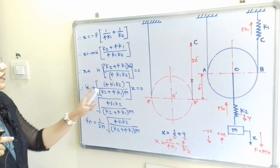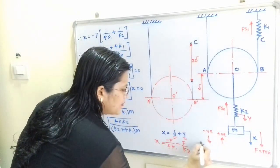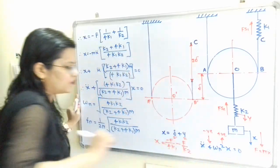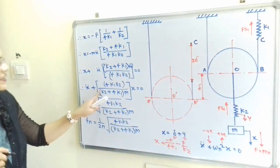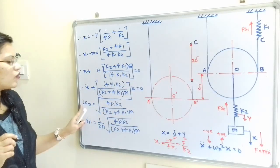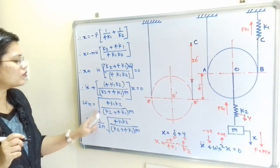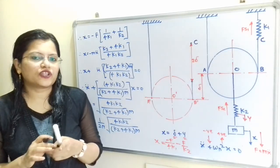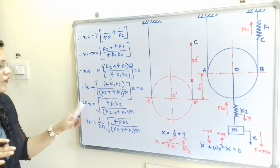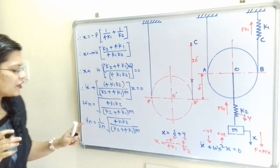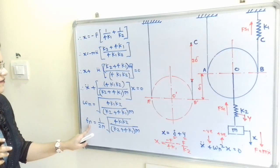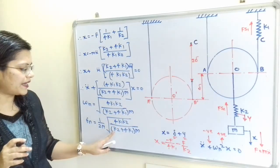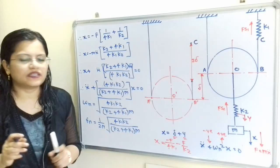We equate this with the standard form Ẍ plus ωN² X equals zero. Then ωN squared equals 4K1K2 divided by (K2 plus 4K1) times M. So the value of ωN is the square root of that bracket, and we have the formula for natural frequency FN equals ωN divided by 2π. Final answer: natural frequency FN equals (1 divided by 2π) times the square root of 4K1K2 divided by (K2 plus 4K1) times M.